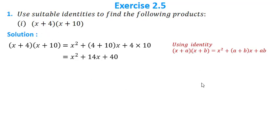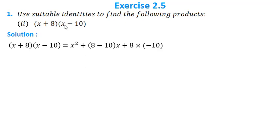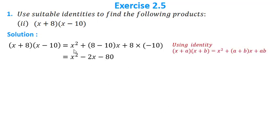The second question is (x + 8)(x − 10). Here a = 8 and b = −10. Using the same identity: x² + (8 + (−10))x + (8 × (−10)) = x² − 2x − 80.